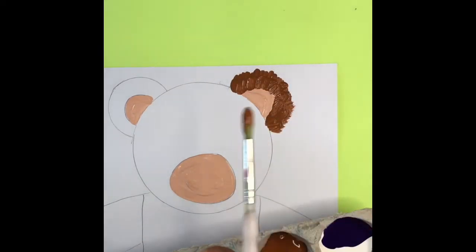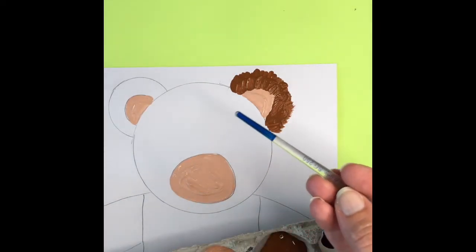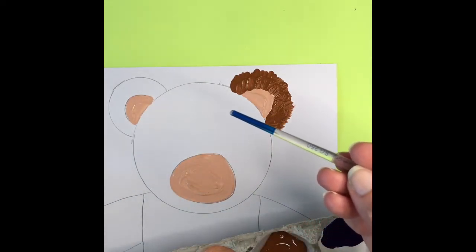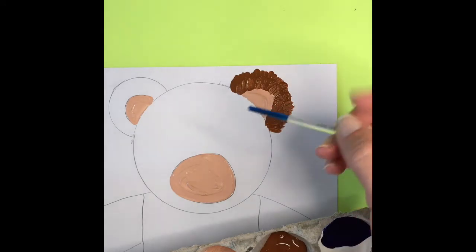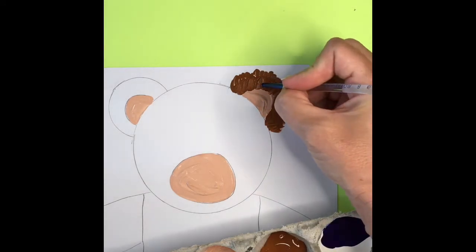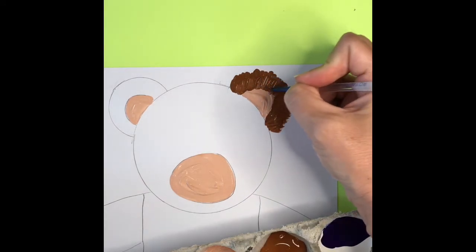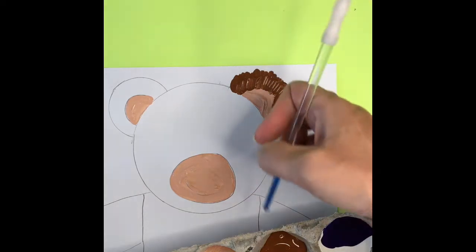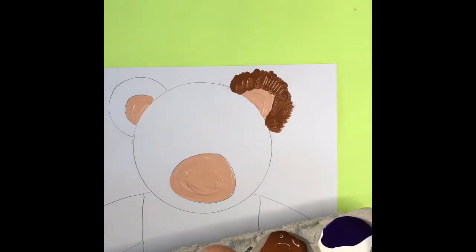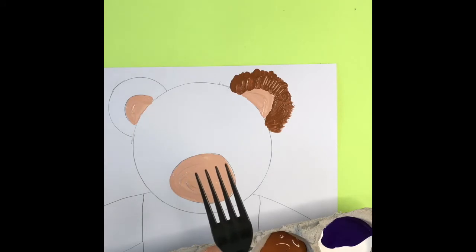Now, this trick is called sgraffito. Many times at school for sgraffito, we use the end of our paintbrush and we use it like this. And we scratch it in so it looks like a pencil. What we're going to do, since we're at home, is we're going to try to use a little plastic fork.